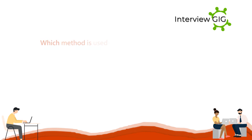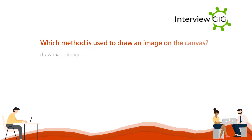Which method is used to draw an image on the canvas? The drawImage(image, x, y) method is used to draw an image on the canvas.